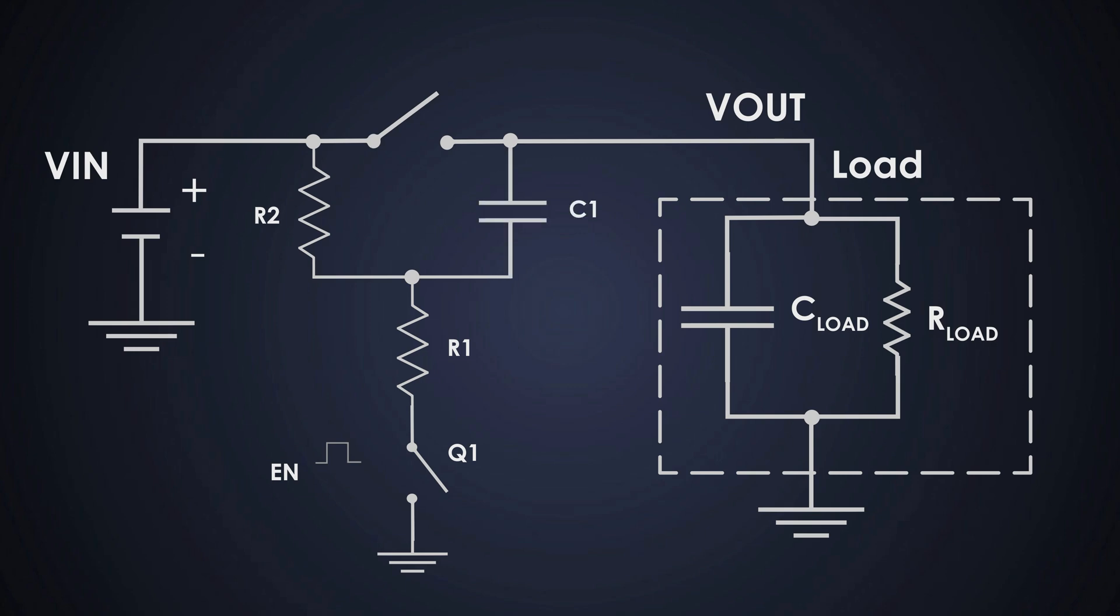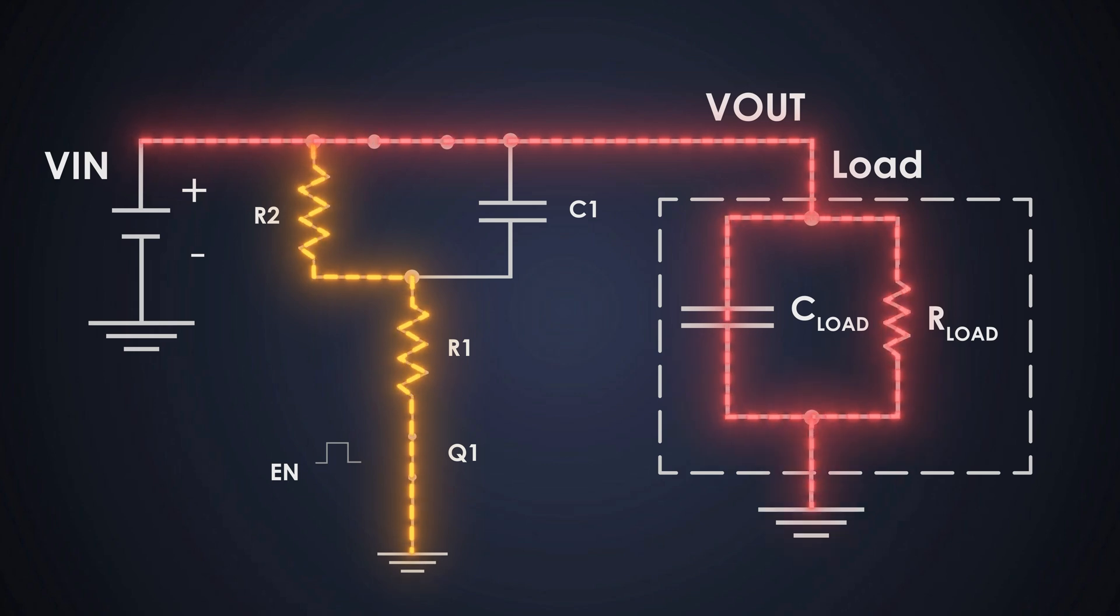But when the Enable is pulled high, Q1 turns on. This pulls the gate of the P-channel MOSFET down through the resistor R1. And this negative gate to source voltage turns the MOSFET on, allowing full power to flow into the output.